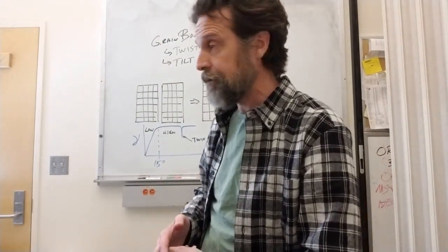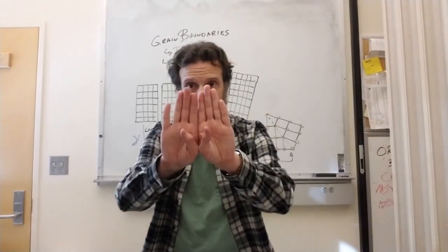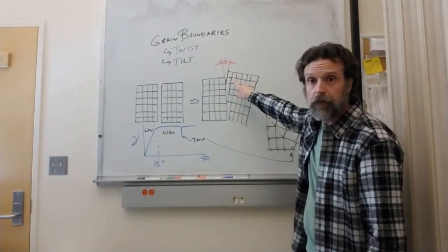We talk much more about tilt grain boundaries, in which you have these halves, split them, put them at a slight angle to each other, then push them back together. That's what I've drawn here.